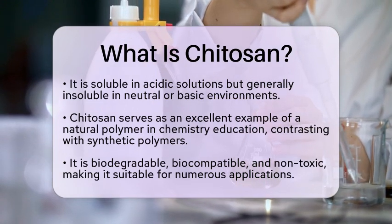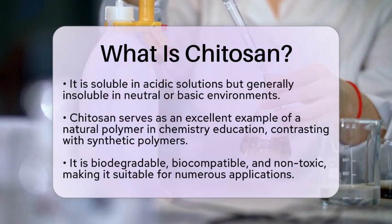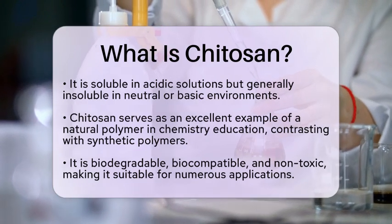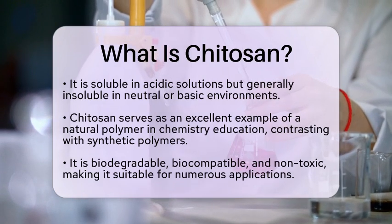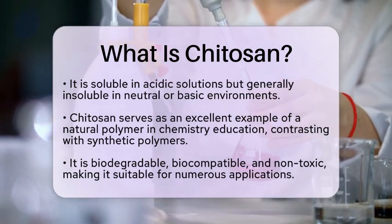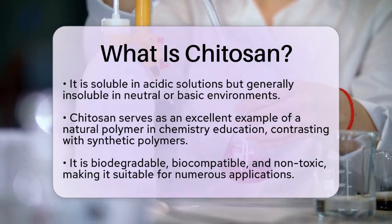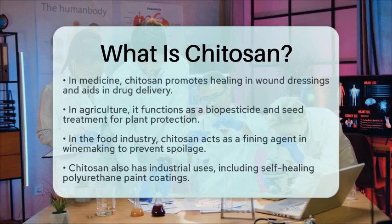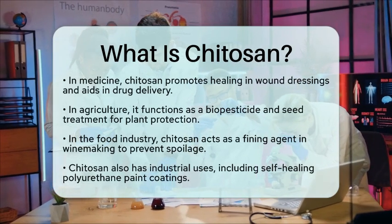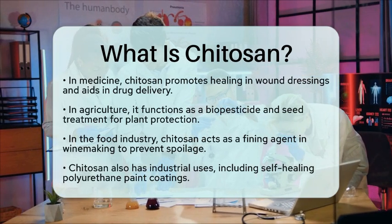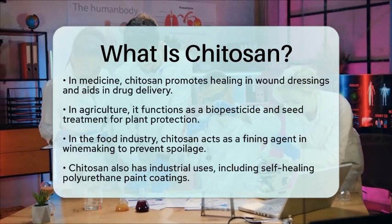In medicine, chitosan is used in wound dressings to promote healing and reduce bleeding. It also acts as a drug delivery agent, helping transport medications through the skin. In agriculture, it serves as a biopesticide and seed treatment to enhance plant resistance against fungal infections. In the food and beverage industry, chitosan is utilized as a fining agent in winemaking, helping to prevent spoilage.